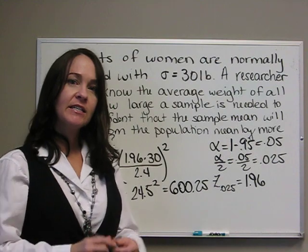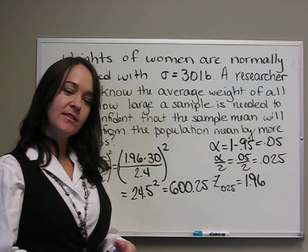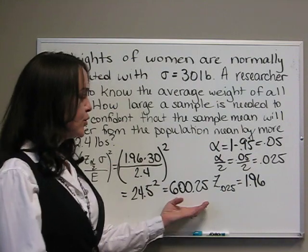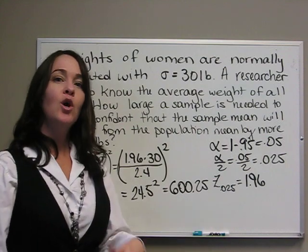Now remember, we're taking a sample of women. We can't take 0.25 of a woman. So what we do with our sample size is we always, no matter what the decimal is, round up.